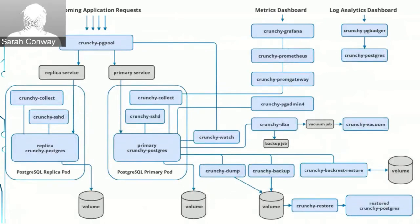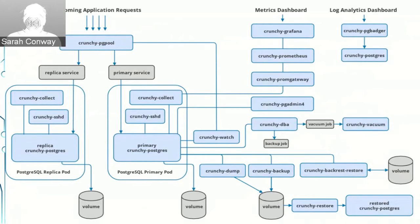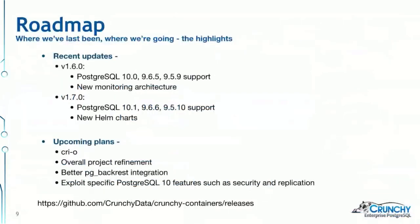The architecture graphic shows how all these containers interact. Incoming application requests go through the pgpool load-balancing container, which distributes workload between primary and replica pods. crunchy-collect pulls data from the databases and processes it into the metrics dashboard, displayed through Grafana after being held in the Prometheus data store. pgAdmin 4 and pg_badger pull data directly from the Postgres container. Three different options for performing a backup all pull from the primary Postgres container and write to a volume, which is then used to restore a new container.